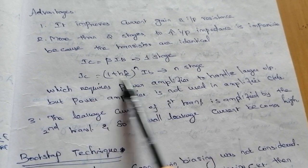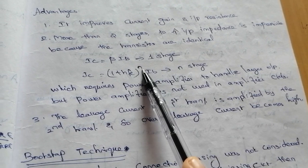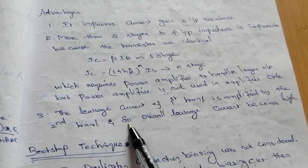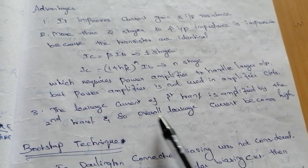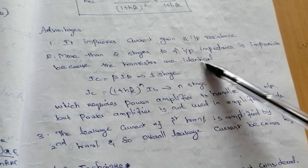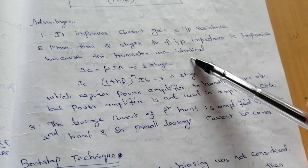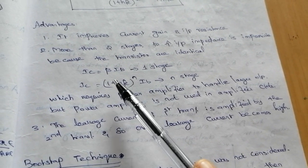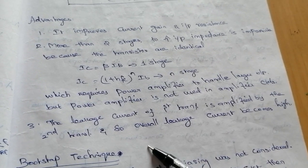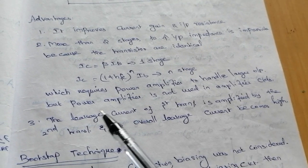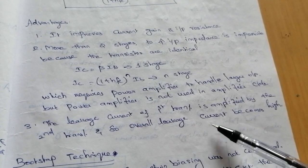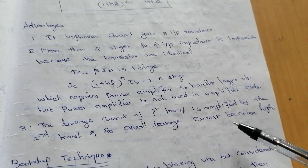Using n stages would require a power amplifier to handle the large output, but power amplifiers are not used in amplifier circuits. The leakage current of the first transistor is amplified by the second transistor, so the overall leakage current becomes high. These are the drawbacks of the Darlington amplifier: first, it can only be used in two stages because more than two stages requires more power, which is not available in an amplifier circuit; second, the overall leakage current becomes high because the leakage current from the first transistor is amplified and passed to the second stage.